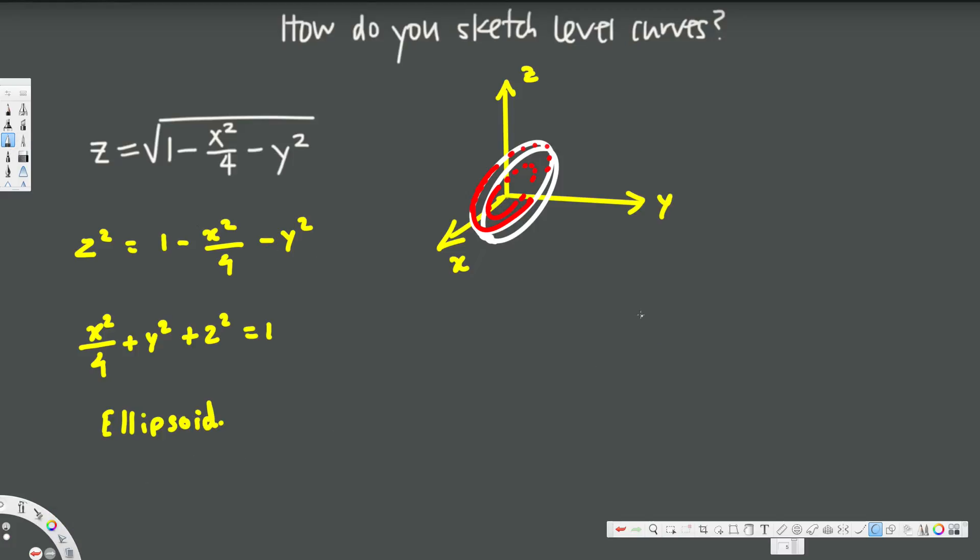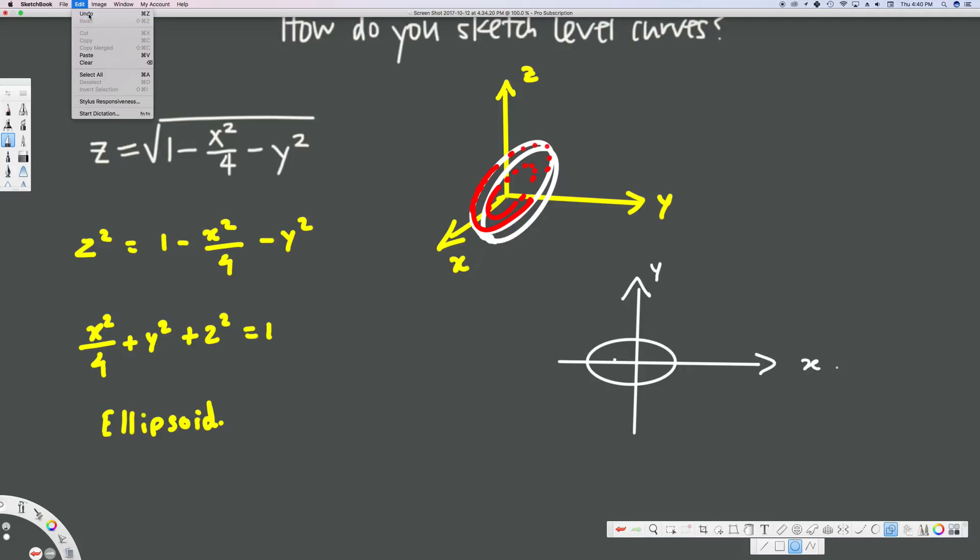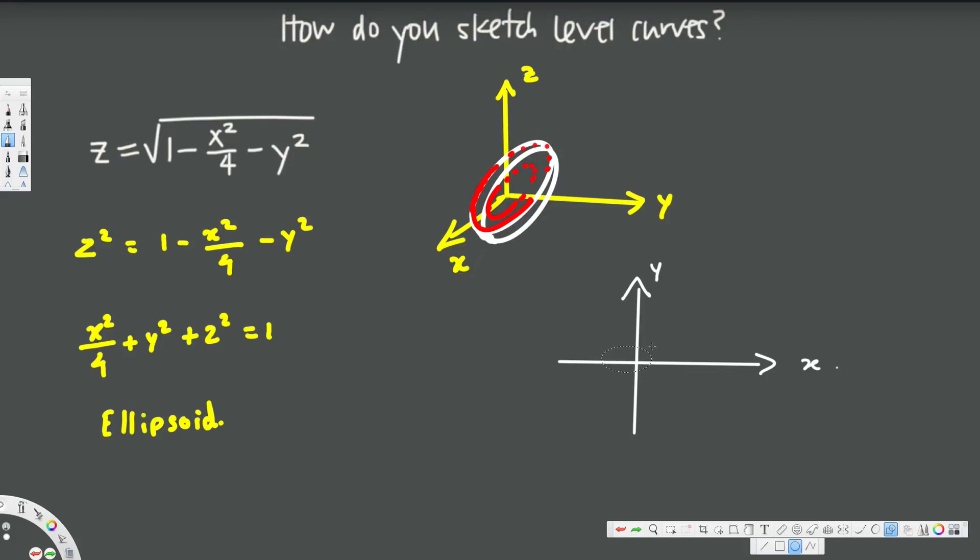Now let's go ahead and draw our xy plane. So here we have y-axis, x-axis, and here we are going to have ellipses. Let's draw some ellipses. So ellipses will go like this. It's from the center, it should be okay. So we are going to have some ellipses like this. So this is going to be the level sketch for this 3D diagram.